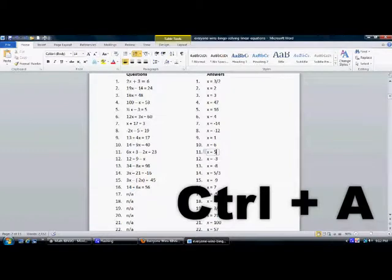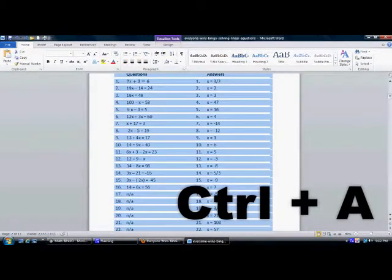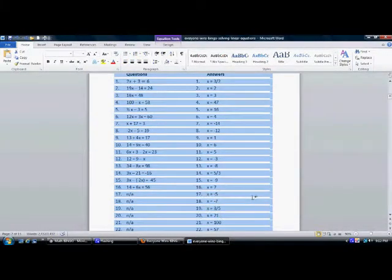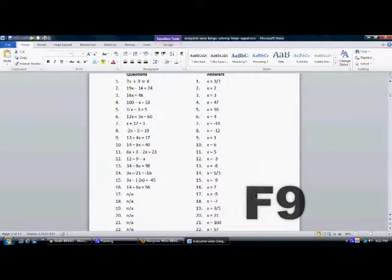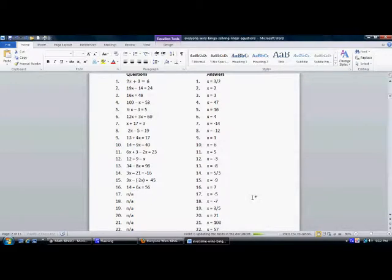Once you've typed in your questions and their corresponding answers, press control A. This will select all text in the document. Then, press F9. This will take your answers and automatically fill in the 26 bingo boards below.